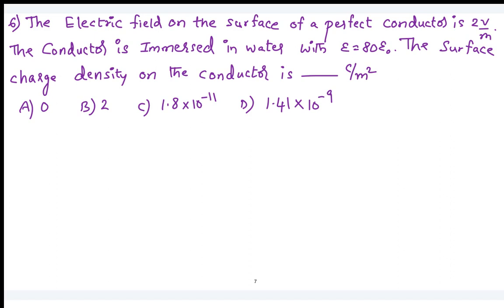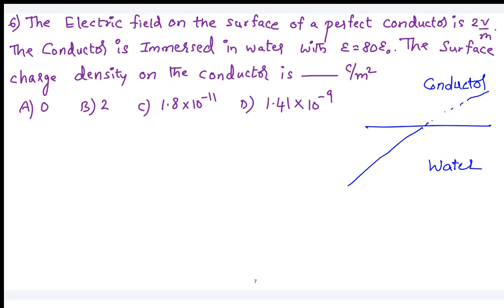You can see here there is an interface between water and the conductor. The conductor will not allow any electric field or magnetic field, so the signal flows on the surface. He is asking what is the surface charge density on the surface of the conductor — that means on the interface between water and conductor. You can apply the boundary conditions, because we know the electric field intensity on the surface.